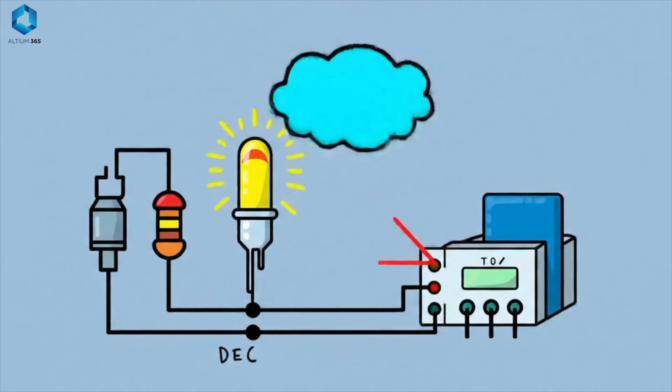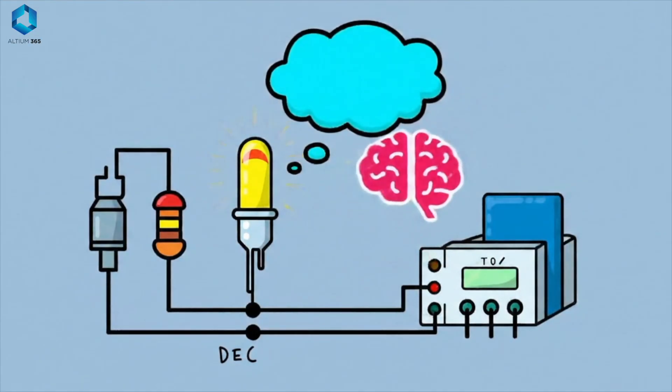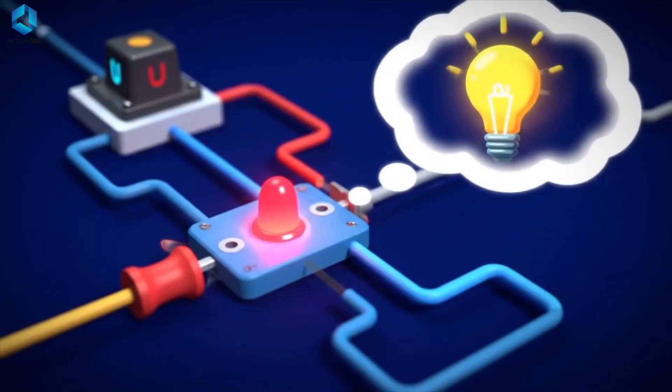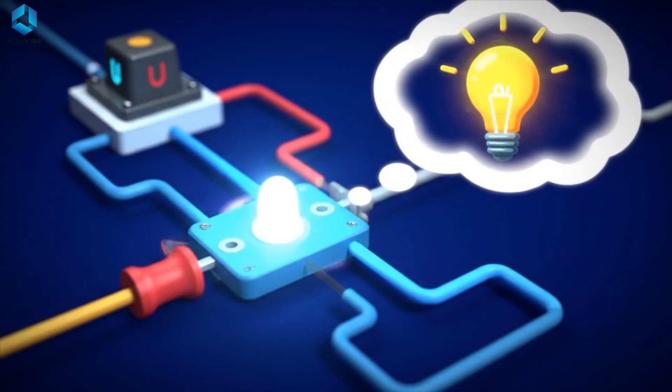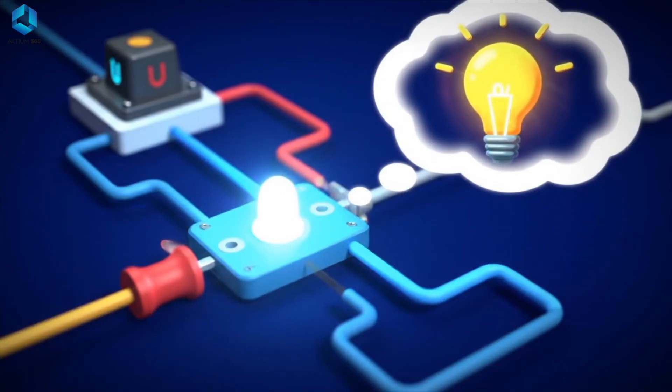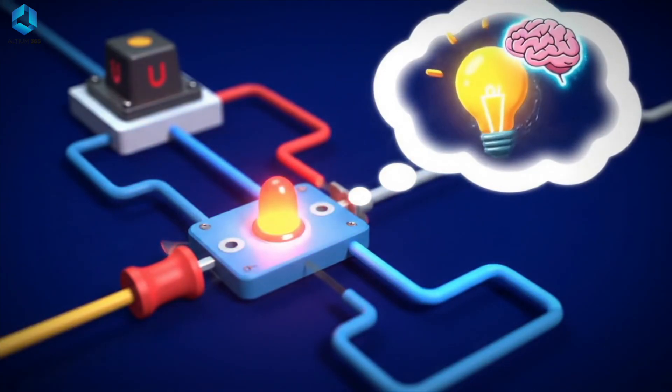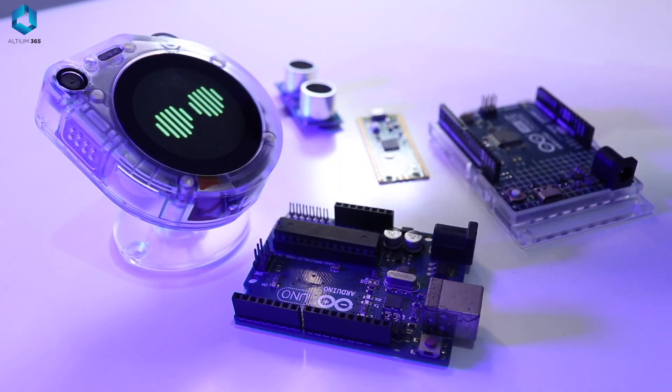First of all, why do we need Arduino or Raspberry Pi in our projects? Why can't we use simple components like resistors, LEDs, transistors, diodes, etc.? To some extent we can use these simple components in a circuit and make really good projects, but again to some extent these simple components cannot make complex decisions.